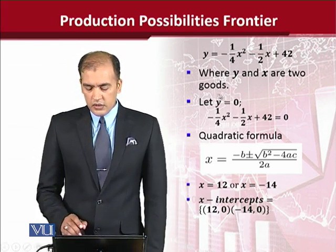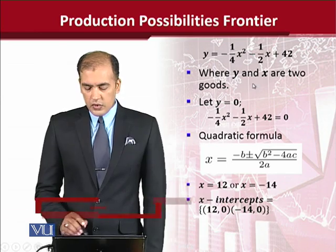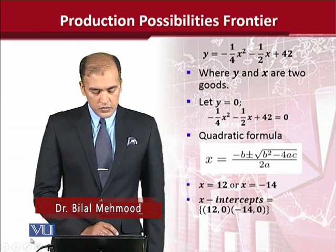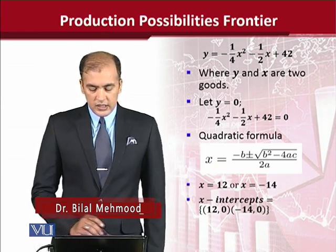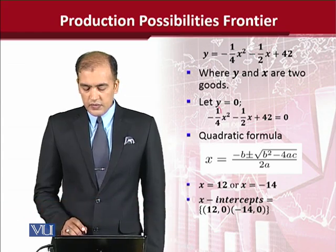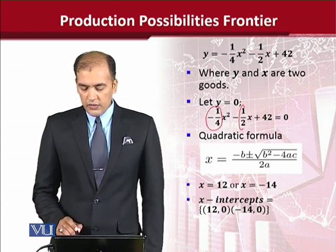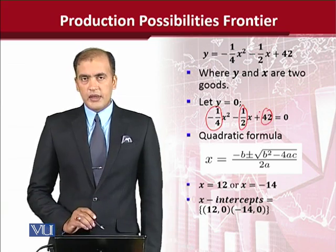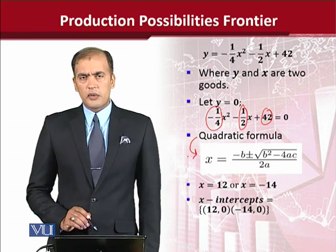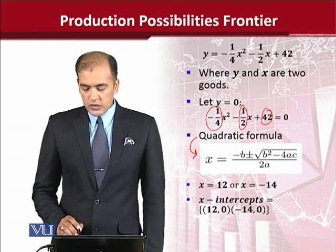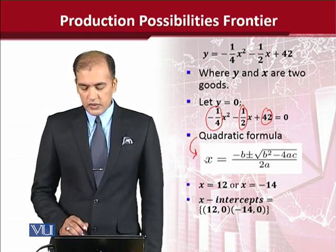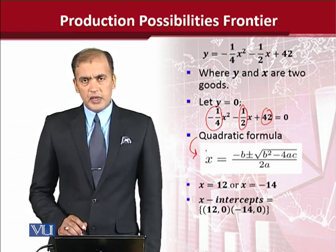Starting with y: if y is equal to 0, the left-hand side becomes 0 and gives us the standard form of a quadratic equation in which we have a, b, and c. These are used in the quadratic formula, which you are well familiar with. We put these values of a, b, and c, and that allows us to get the values of the variable.